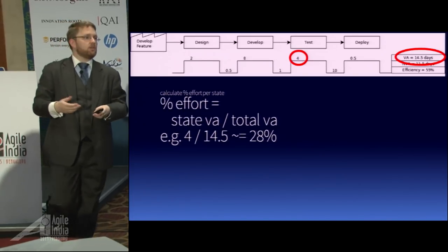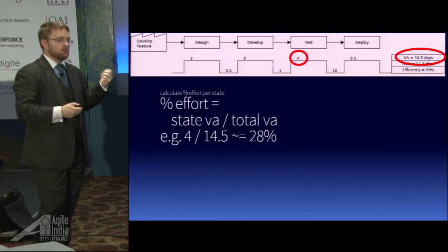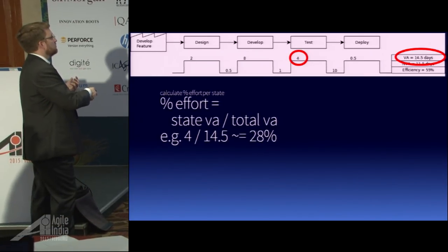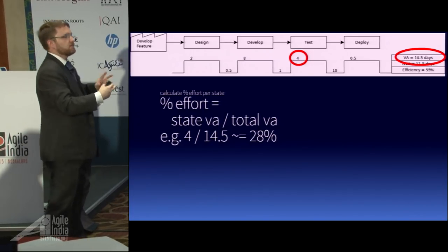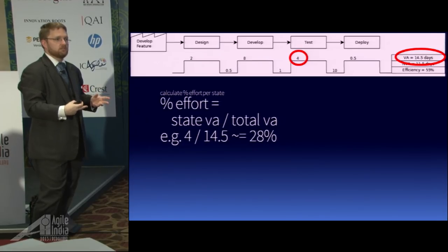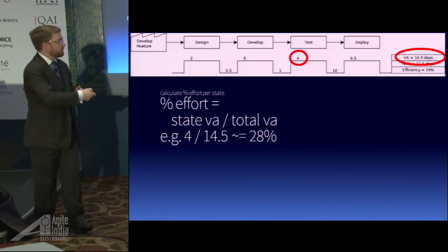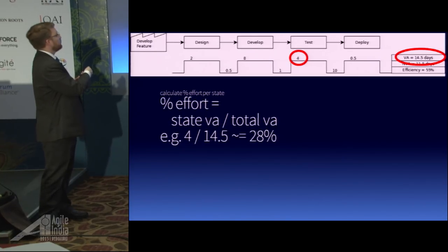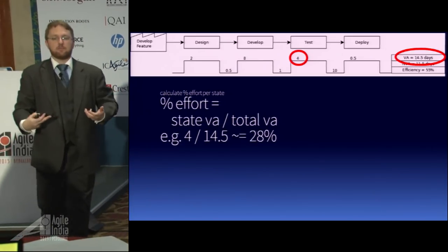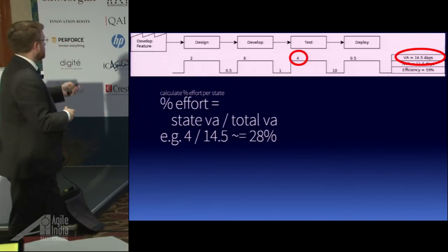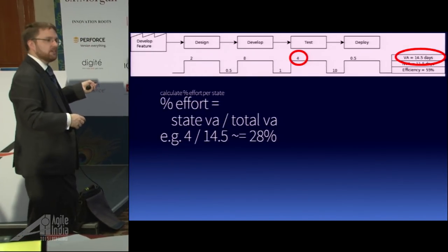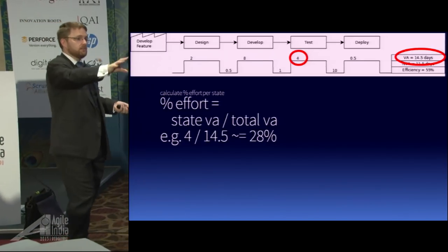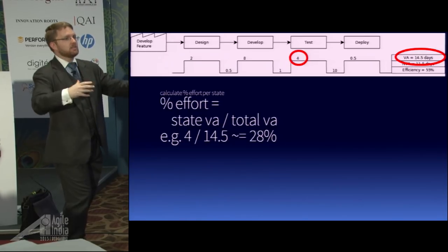Reducing cycle time can be one way to improve efficiency, but I can just as easily spend more time here and less time there — my total throughput doesn't change, but my cycle time might. Cycle time can be a measure but it depends on where the changes lie. Here's a good example: if I changed my development time to two days to deliver the same feature, my efficiency would go down but I'd still be delivering faster. So you do want to bring your cycle time down, but cycle time isn't a one-to-one measure for efficiency.